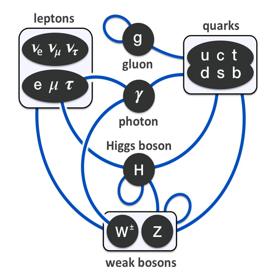The first step towards the Standard Model was Sheldon Glashow's discovery in 1961 of a way to combine the electromagnetic and weak interactions. In 1967, Steven Weinberg and Abdus Salam incorporated the Higgs mechanism into Glashow's electroweak interaction, giving it its modern form. The Higgs mechanism is believed to give rise to the masses of all the elementary particles in the Standard Model, including the masses of the W and Z bosons, and the masses of the fermions — i.e., the quarks and leptons.